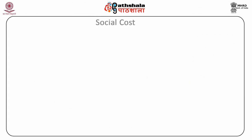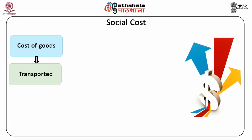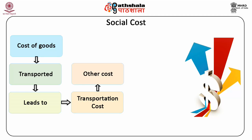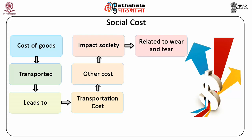The first concept we discuss is social cost. When goods are transported from one place to another, a private firm incurs transportation cost. Besides this transportation cost, there are certain costs which, though ignored by a firm, do have a serious impact on society. These costs are related to the wear and tear of roads and pollution. These costs which have to be borne by society come under the head of social cost.